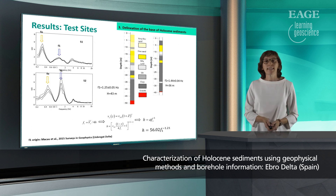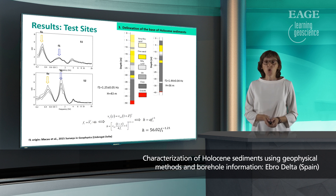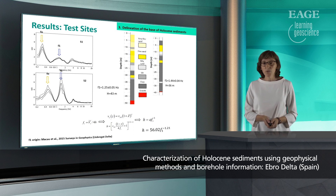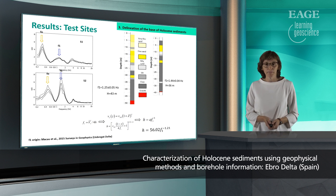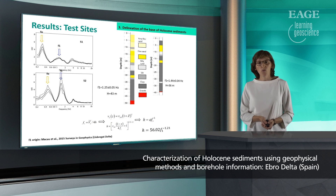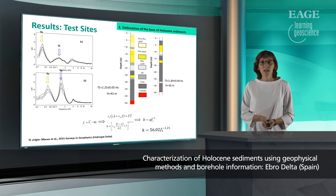These are the results obtained for the HVSR technique. Both plots show two peaks at the frequencies identified as F0 and F1. F0 represents the soil fundamental frequency and is related to the impedance contrast between the soft sedimentary cover and the bedrock. F1 is interpreted as a resonance frequency due to a large acoustic impedance contrast between fine sediments and gravels, as was shown by Macauan authors in another delta. These frequency values can be transformed into depth values using an empirical relationship of exponential type. HVSR frequency and depth of the Holocene base from boreholes and from ERT models are used to fit this curve and obtain the constants of the expression.